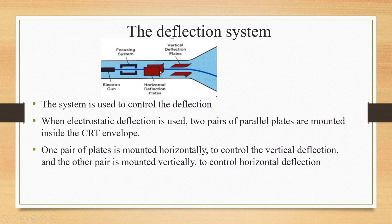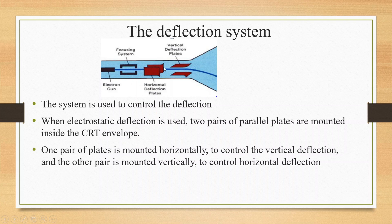Two pairs of parallel plates are mounted: the first pair is mounted horizontally. The vertical deflections are controlled by the horizontal plates. Two vertical plates control left and right deflections.